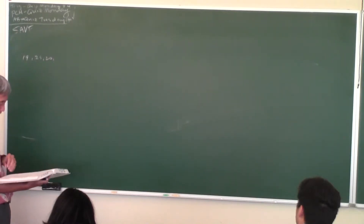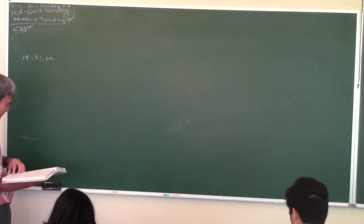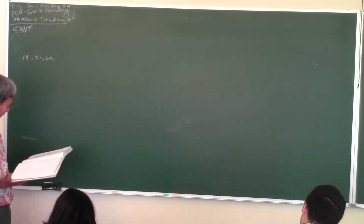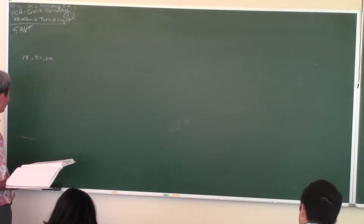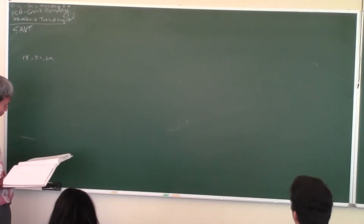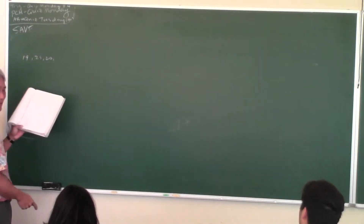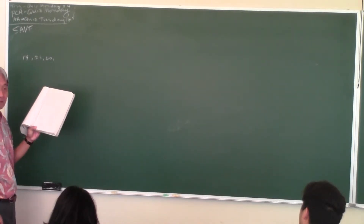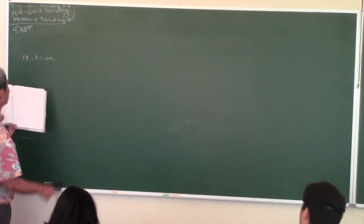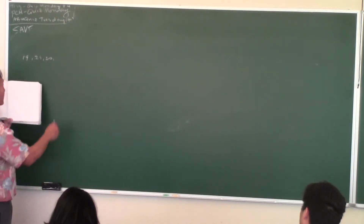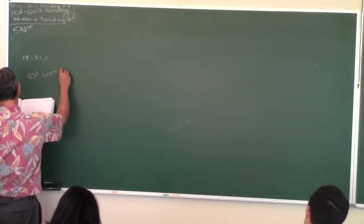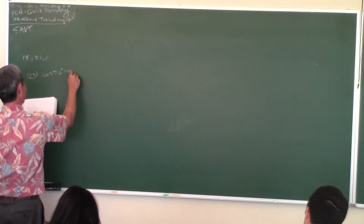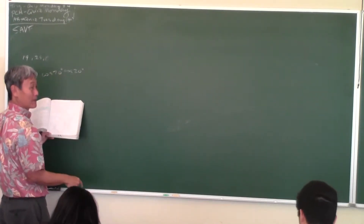We're on section 8.4. I did one example last time — did you guys forget? Okay, problems 21 through 29 odd — you might have two of these. Let's do number 23. Have we started memorizing these identities? Because they've got to be memorized by Monday.